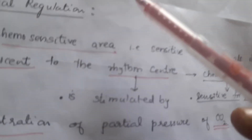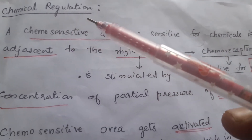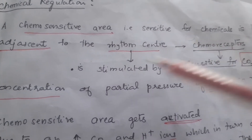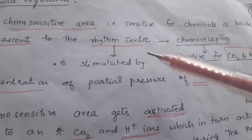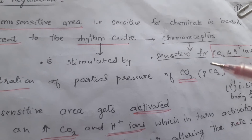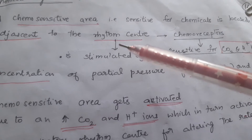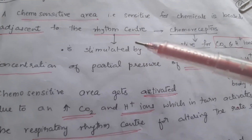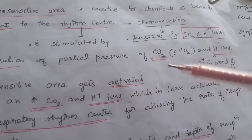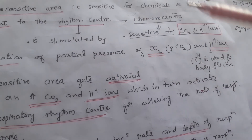Those two centers come under neural regulation. For chemical regulation, the chemosensitive area — which is sensitive to chemicals — is present just adjacent to the respiratory rhythm center. Chemoreceptors present in the chemosensitive areas are sensitive to carbon dioxide and H+ ions, and they stimulate the rhythm center. The concentration of CO2 and H+ ions, through partial pressure, stimulates the rhythm center.